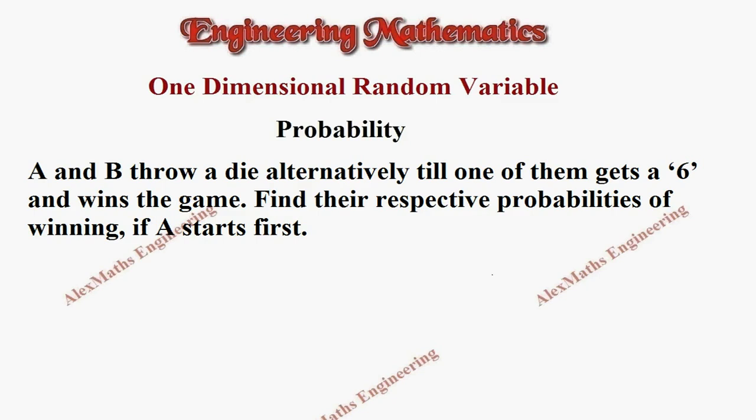Hi students, this is Alex. In this problem, A and B throw a die alternatively till one of them gets a 6 and wins the game. You have to find their respective probabilities of winning if A starts first.